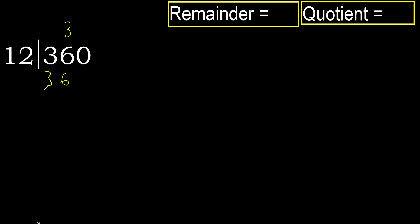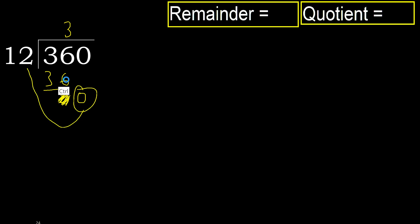Subtract: 36 minus 36 equals 0. Next, bring down 0. 0 is less, therefore there is no next number, therefore finish.